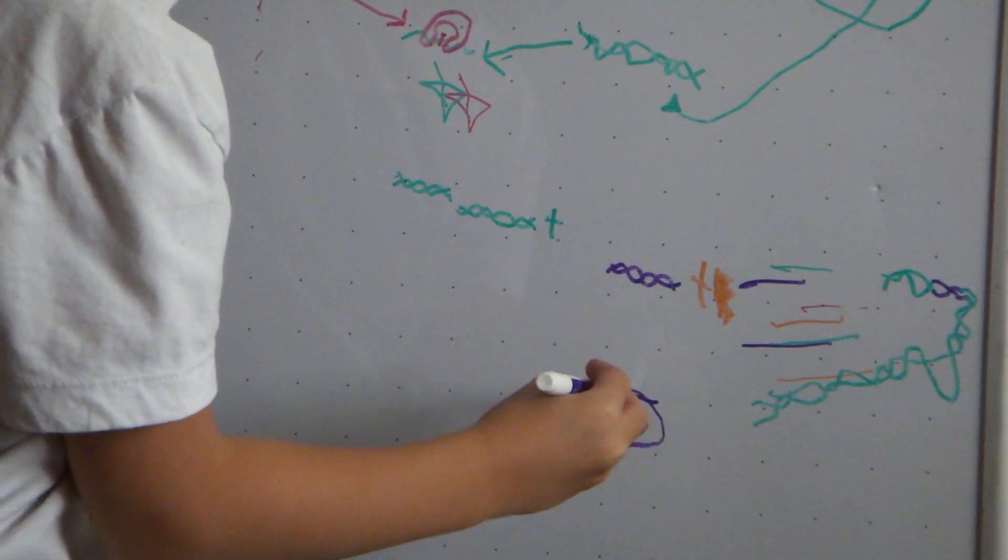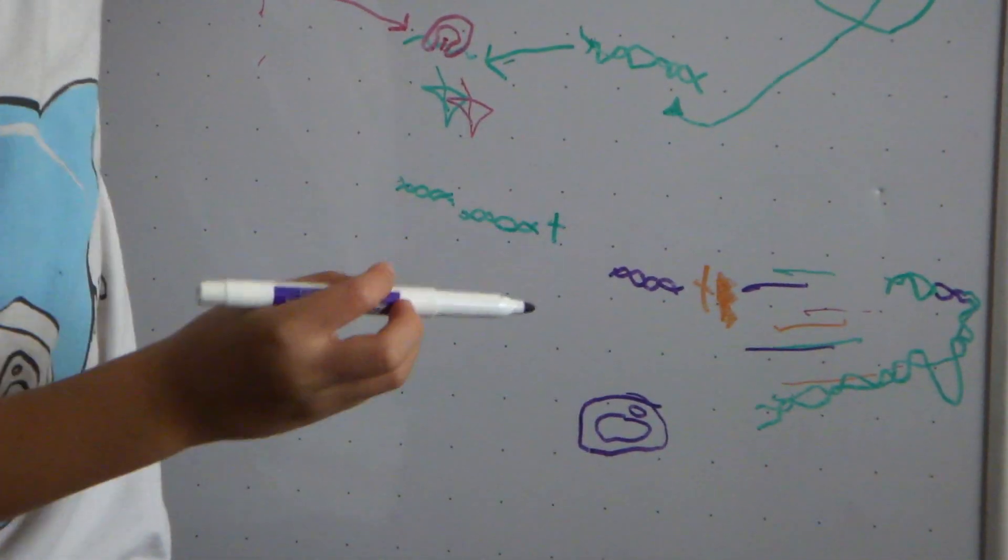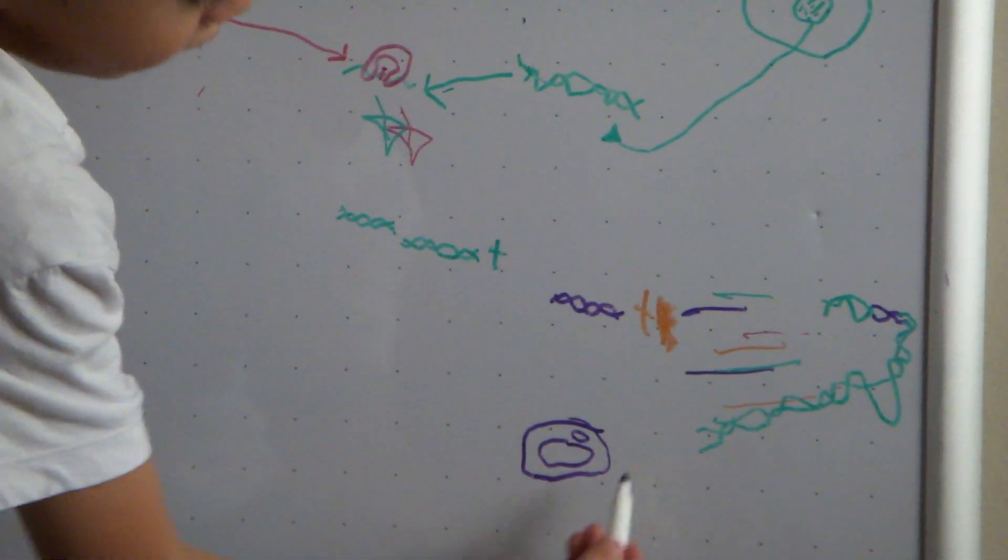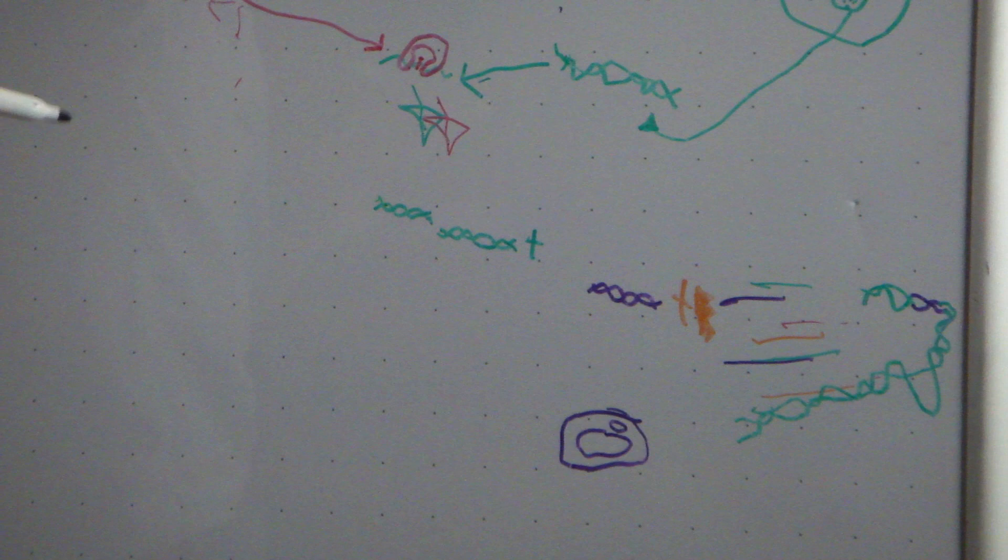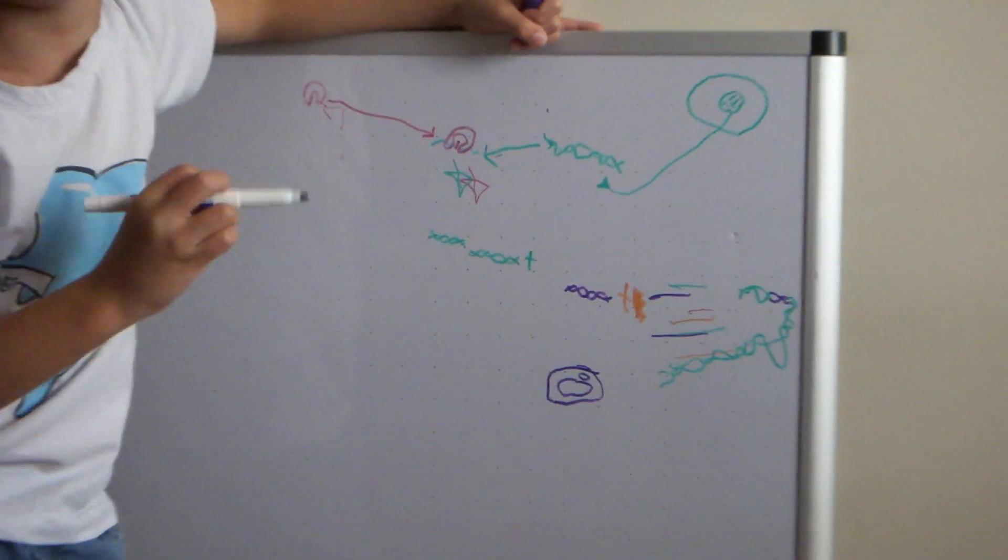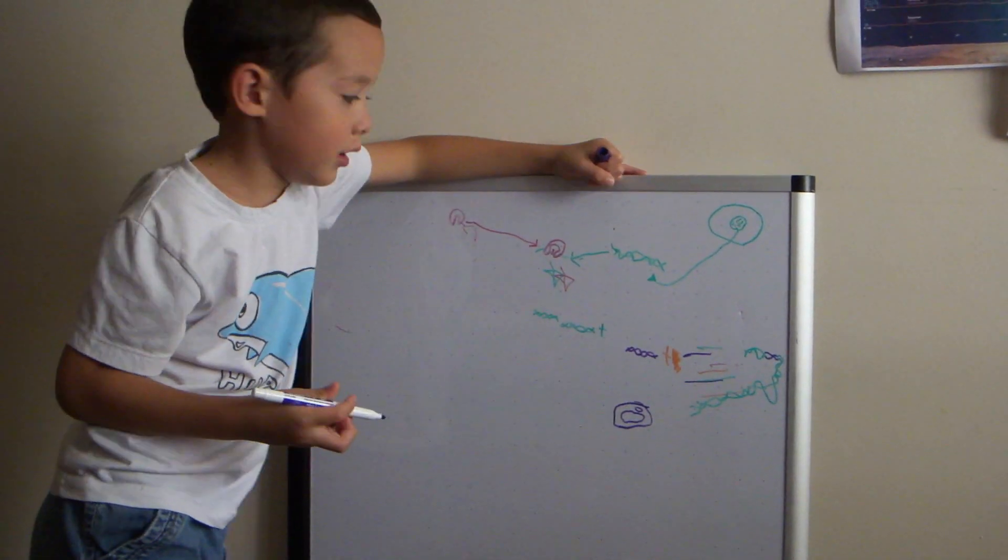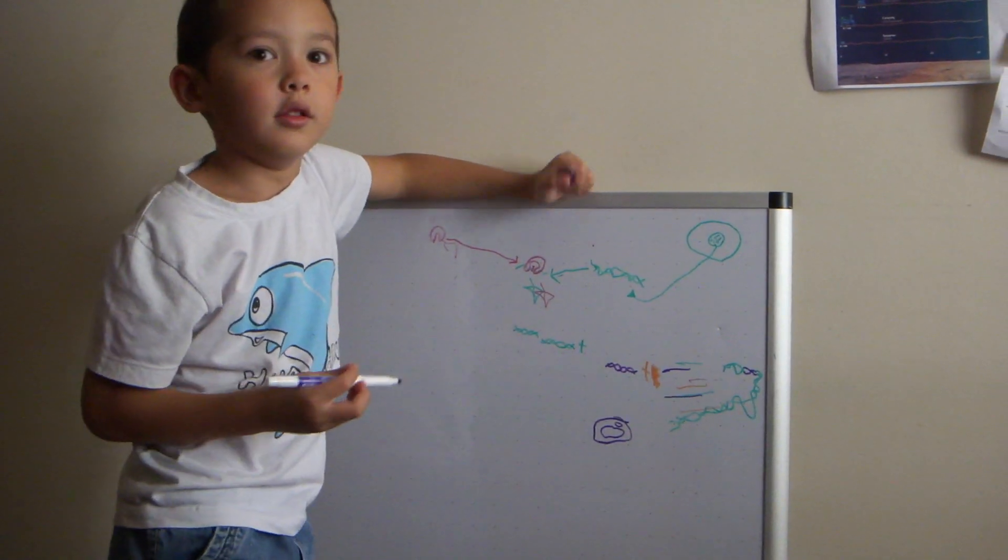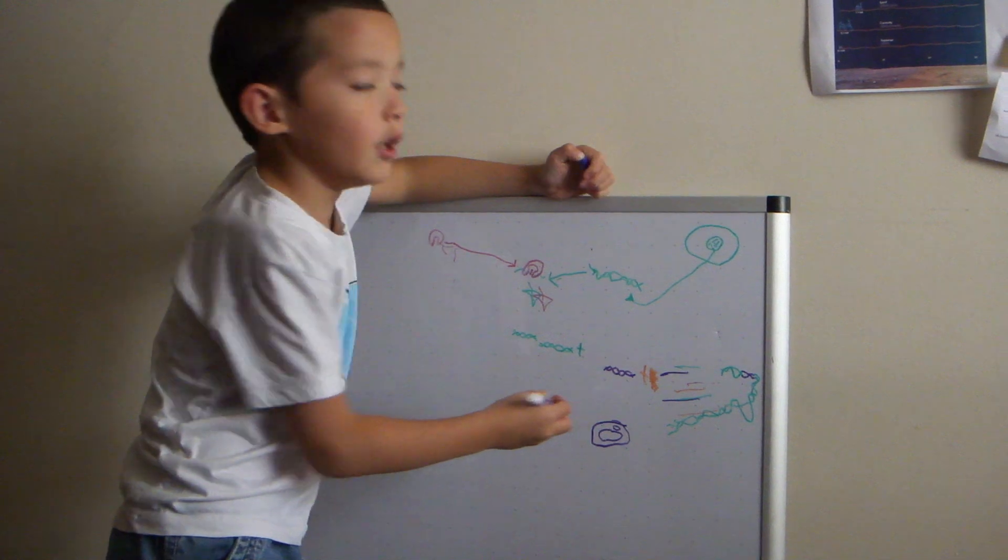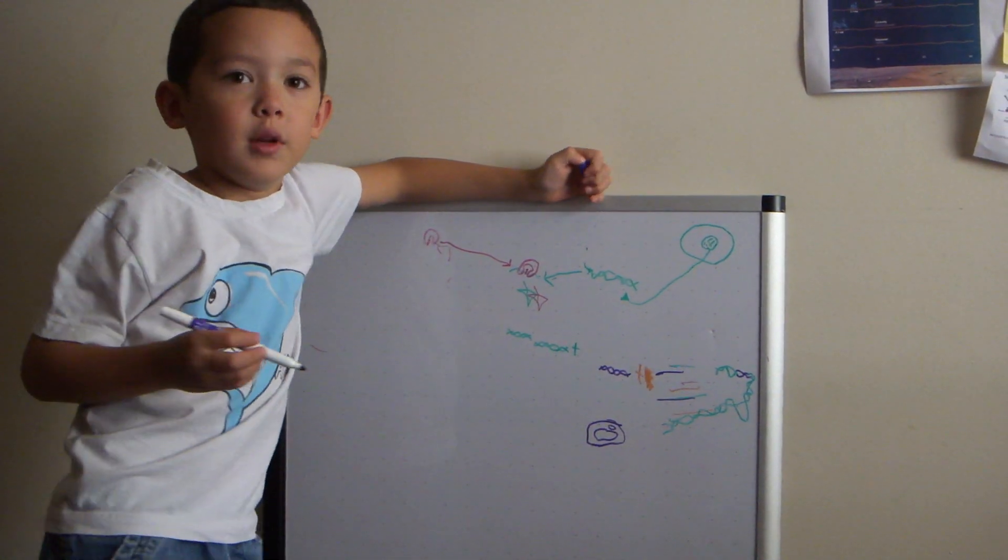This, for example, this is a bacteria. This little circle is a plasmid. Okay. The big one is the, is the, is its genome.